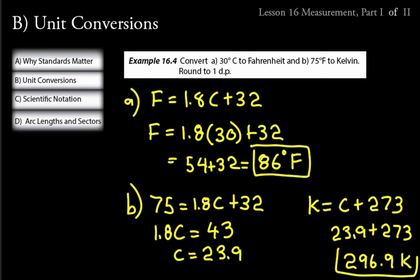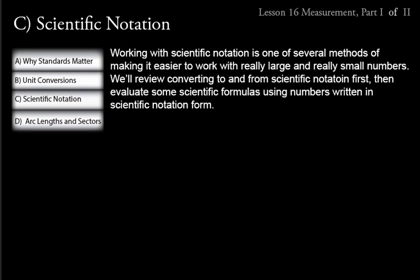There are other conversions we can do too — length, area, volume — and we'll do some of those in Lesson 17. But that's all for unit conversions for now. Let's go on to Part C on scientific notation. Working with scientific notation is one of several methods of making it easier to work with really large and really small numbers. We'll review converting to and from scientific notation first, then evaluate some scientific formulas using numbers in scientific notation form.